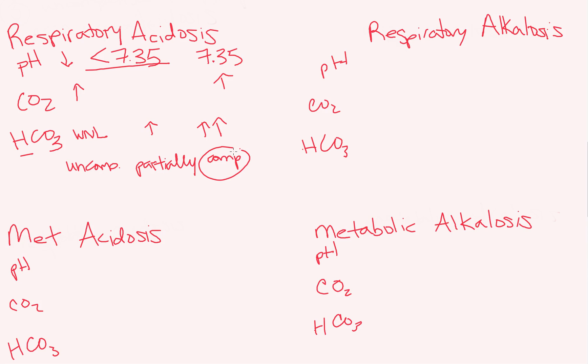With respiratory alkalosis, our pH is basic — greater than 7.45 — and it's a respiratory cause, meaning CO2 is causing it. CO2 is an acid, so decreasing our acid gives us alkalosis. A low CO2 from hyperventilating and blowing off CO2 causes respiratory alkalosis. This just happened, so our kidneys have no idea anything is going on — our bicarb is within normal limits. That's uncompensated respiratory alkalosis.